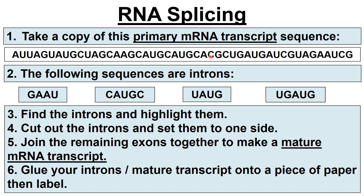Here's a little activity to demonstrate RNA splicing. Write out that sequence — within it are intron sequences. Get a highlighter and underline or score them out. When you find those introns, cut them out and set them to one side. What's left are the exons — put them together to make your mature transcript. You should be left with introns set to one side, and your mature transcript which is the exons spliced together.